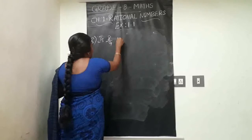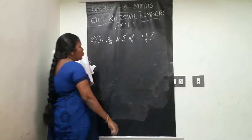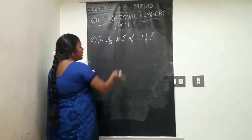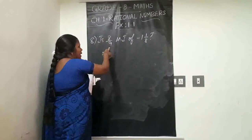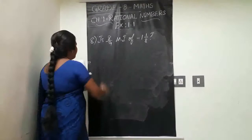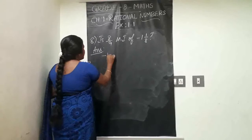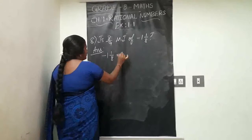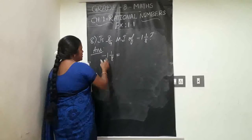Question eight: is 8/9 the multiplicative inverse of minus 1 and 1/8? Why or why not? They are asking whether 8/9 is the multiplicative inverse of minus 1⅛. We have to check and give a reason. First, take the number minus 1⅛. It is in mixed fraction form, so change it to improper form.